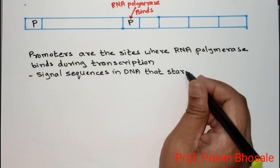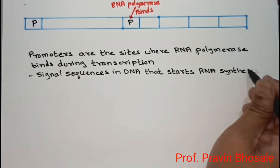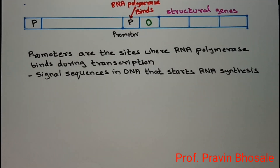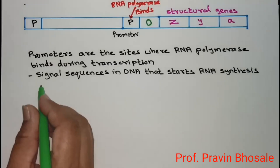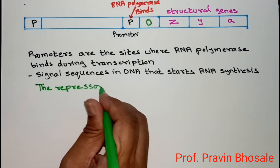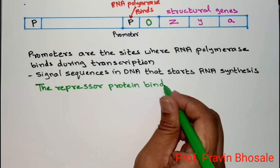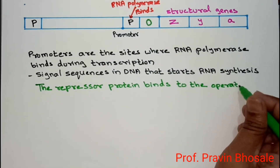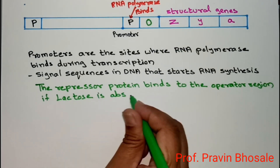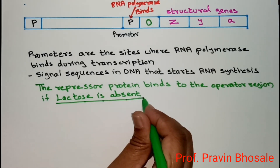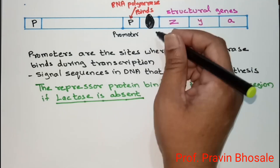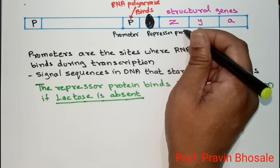O is the operator. The operator is present between the promoter and structural genes. Repressor proteins bind to the operator region when lactose is absent — the lac operon is off. You can see here that the repressor protein binds to the operator region, so RNA polymerase cannot proceed.